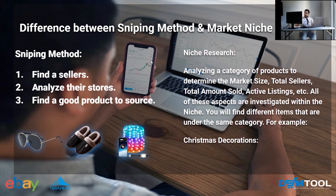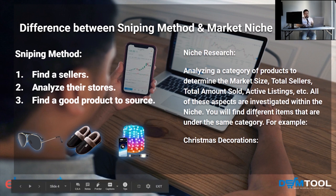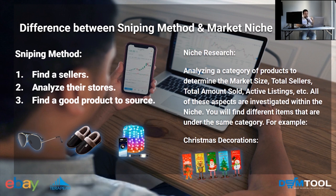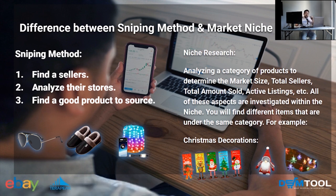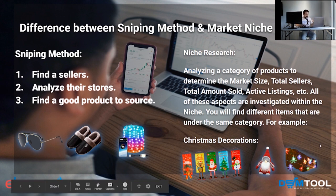Then you have niche research, which is basically analyzing a category of products to determine the market size, total sellers, total amount sold, active listings, and so on. You will find different items within the same category. For example, since we're in December, let's say we want to look for Christmas decorations — that is our category. This is the difference between niche research and a sniping method.